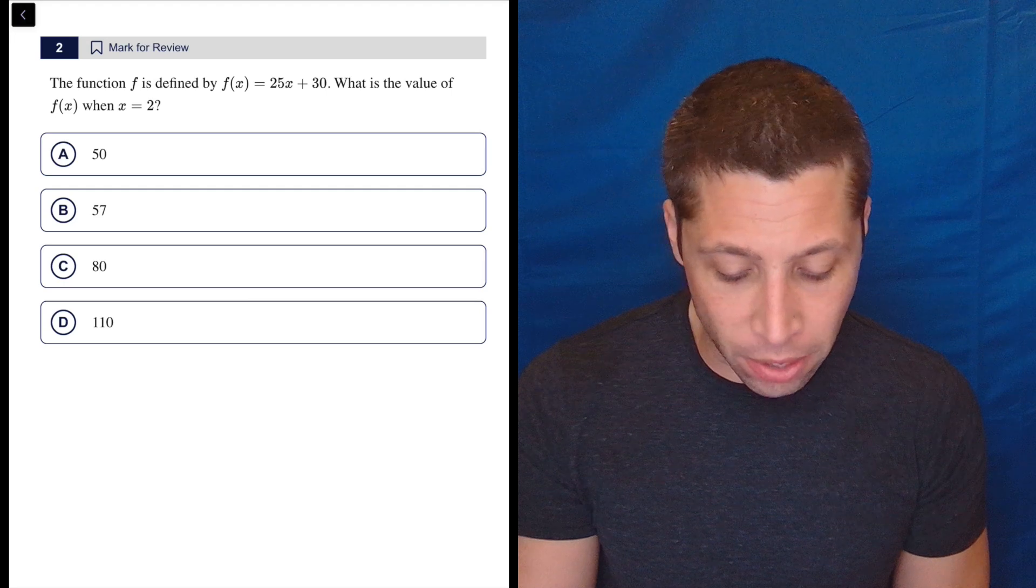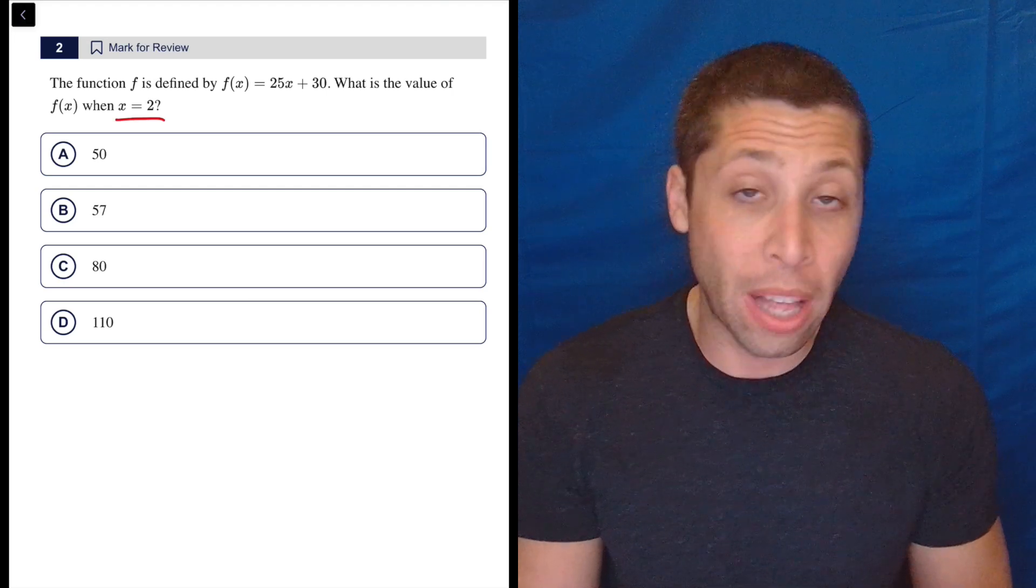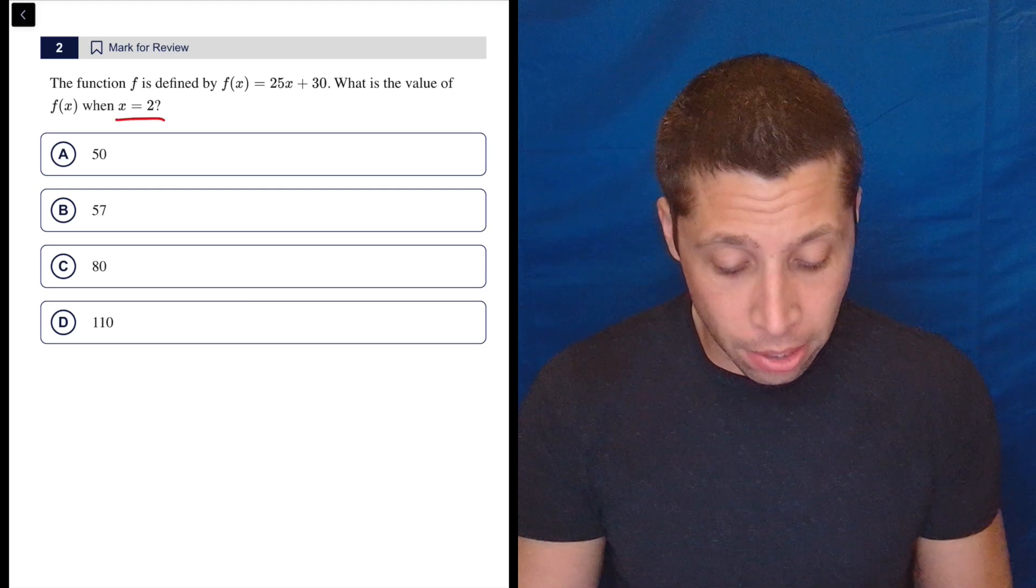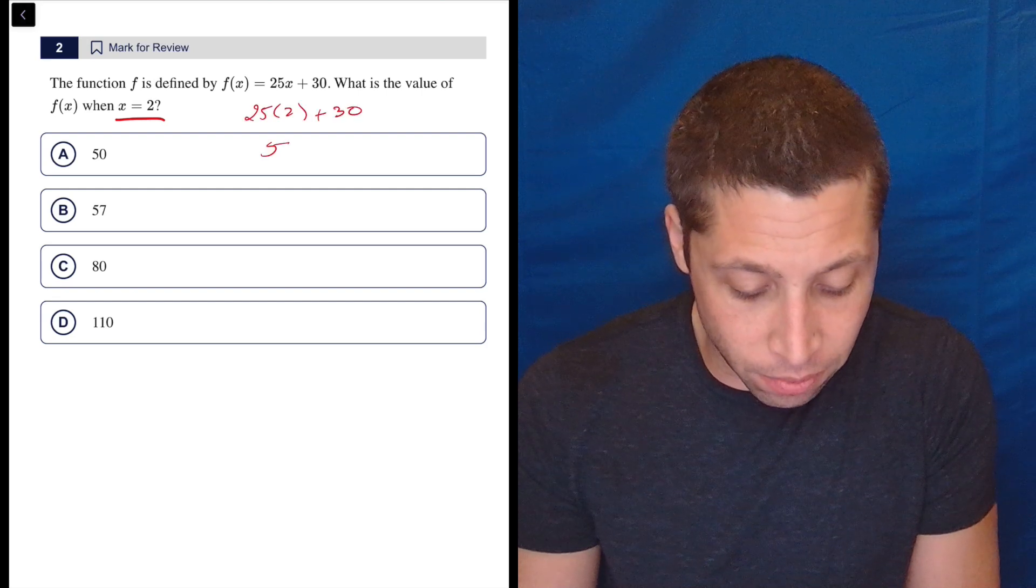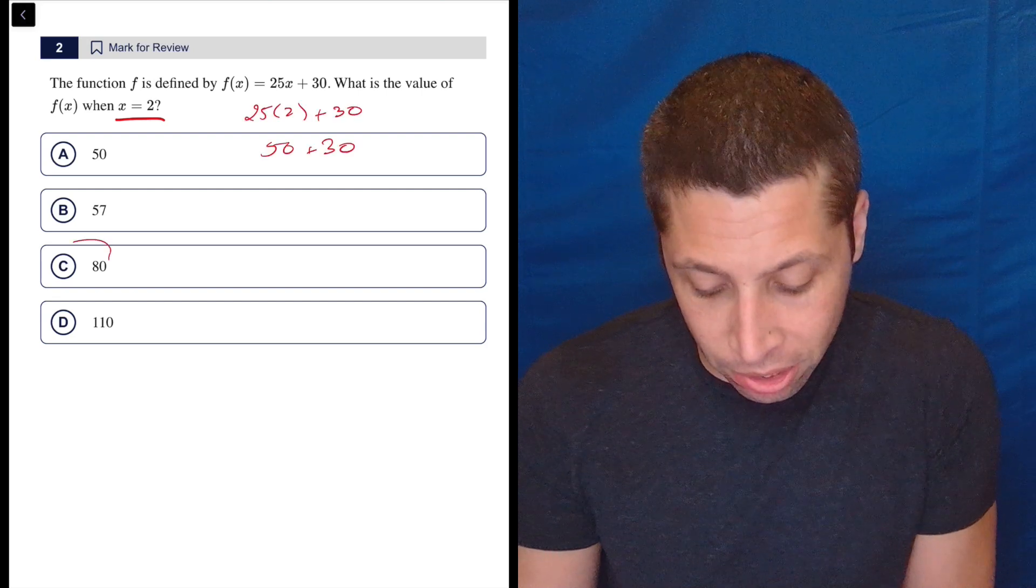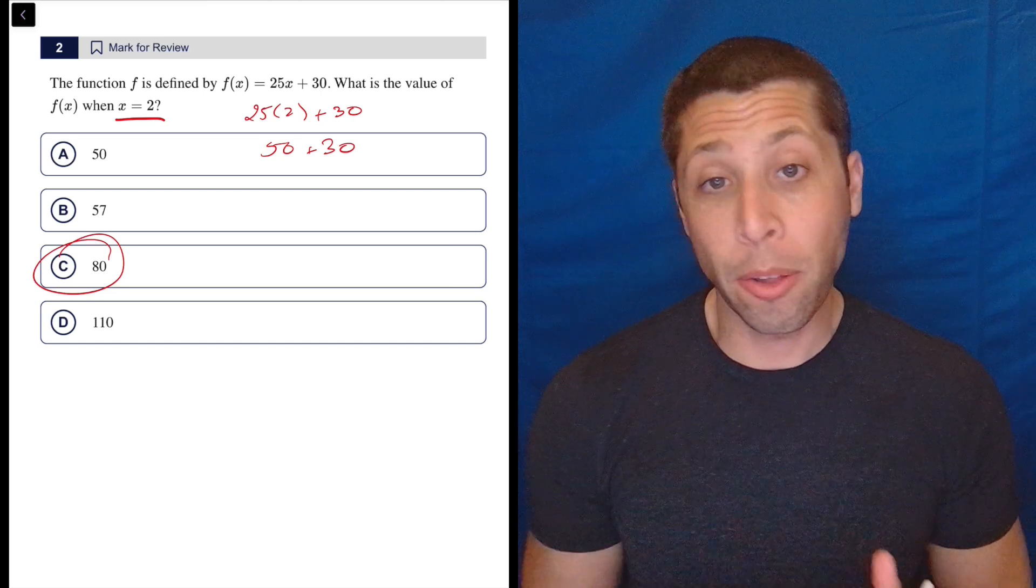So this is just giving us a function. They're asking, what is the value when x is 2? So that just means that 2 goes in for the x. So that's 25 times 2 plus 30, so that's 50 plus 30, which is 80. Done. Nothing more complicated than that.